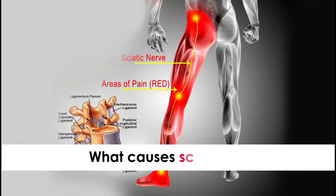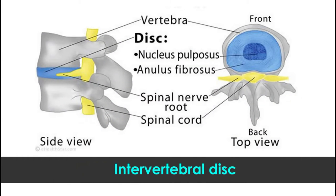What causes sciatica? Sciatica is low back pain because of a slipped disc compressing on the nerve. Sciatica is because of a disc within your spinal cord, what you call an intervertebral disc.